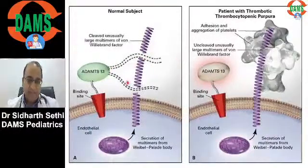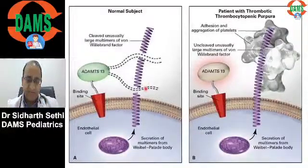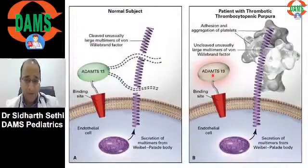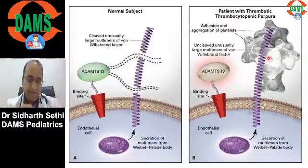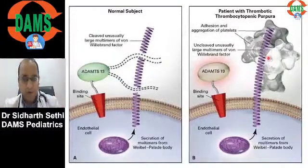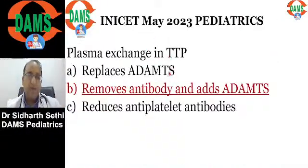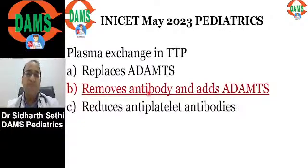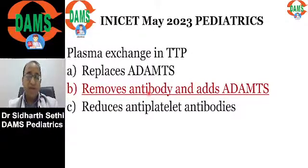ADAMTS13 is an enzyme that cleaves von Willebrand factor. If there is a deficiency or an antibody to ADAMTS13, large multimers of von Willebrand factor accumulate, platelets adhere to vessel walls, and thrombi form in multiple organs. Plasmapheresis in TTP removes the antibody to ADAMTS13 and the new plasma also supplies fresh ADAMTS13 — so plasmapheresis achieves both goals in TTP.